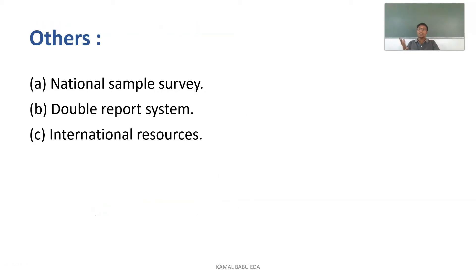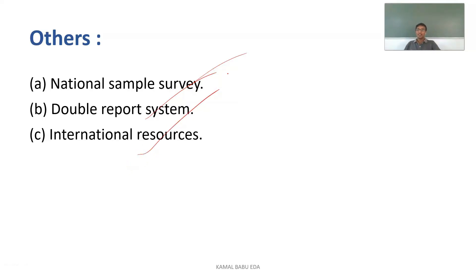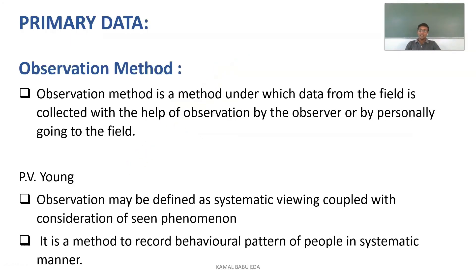Other sources of data collection include the national sample survey, double report system, and international resources. Now, discussing primary data collection — the first method used is the observation method. In the observation method, the investigator or invigilator directly goes to the field to observe a group or an individual.